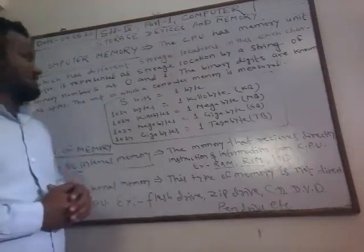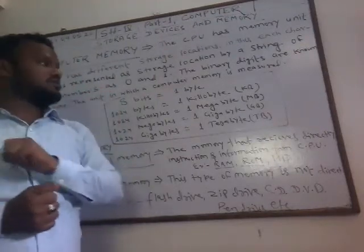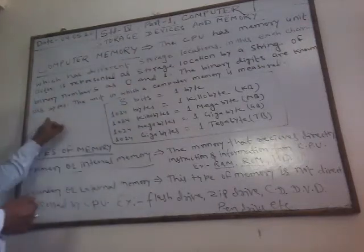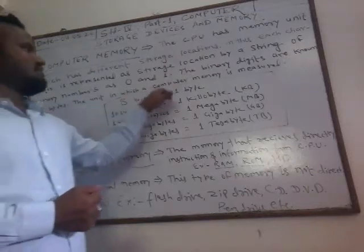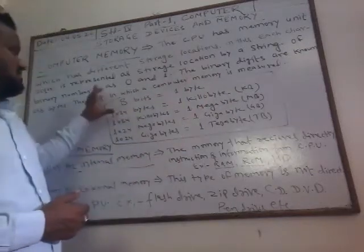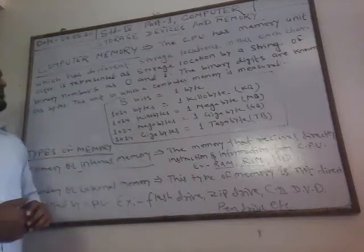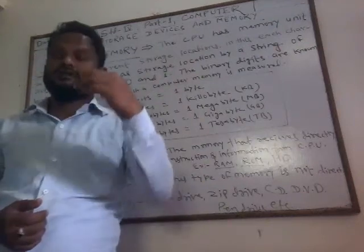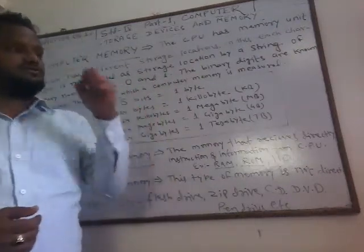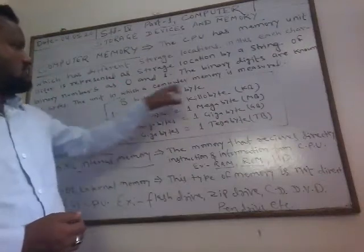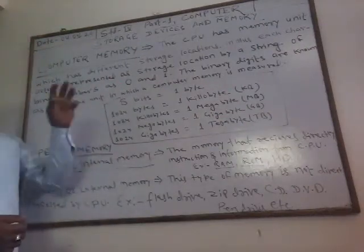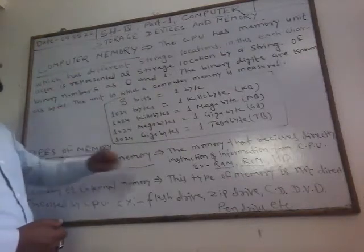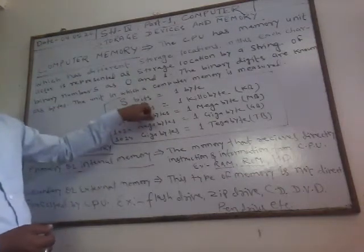The binary digits are known as bits, and the unit in which computer memory is measured — the smallest unit is the byte. We have written here that 8 bits equal 1 byte.